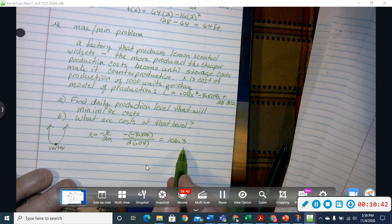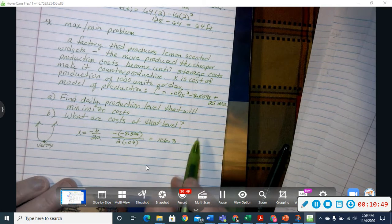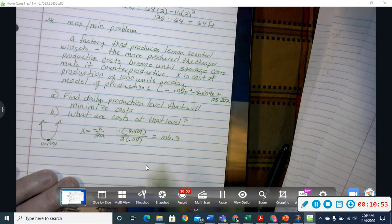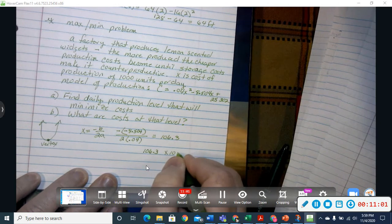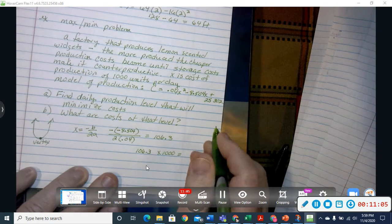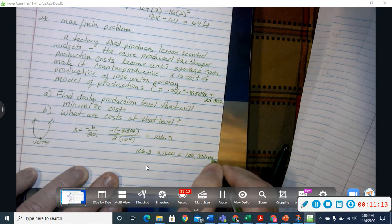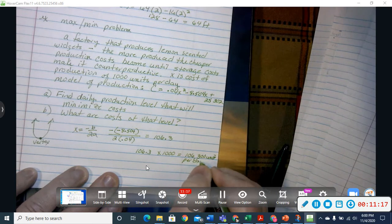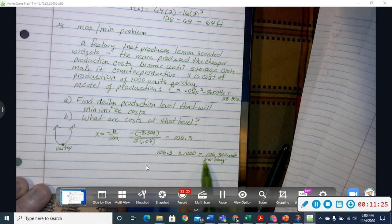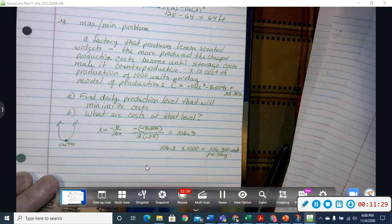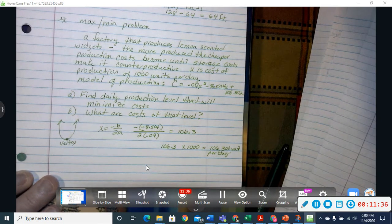Now, remember that our production cost, or that's the number produced, but it is times 1,000, so the number produced, we have to actually take that number, 106.3 times 1,000, which means we actually produce 106,300 units per day. So, our first part was to find the daily production level that will minimize cost. So, that is the number of units that we would produce per day, but we had to go back and remember that that had to be multiplied by 1,000 in order to figure out that number.